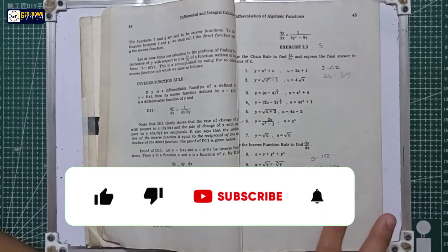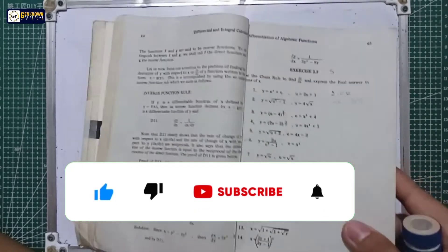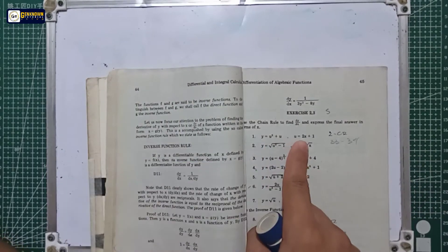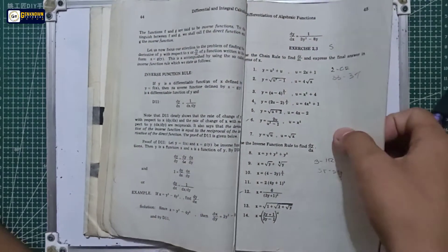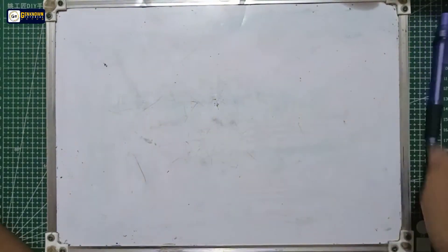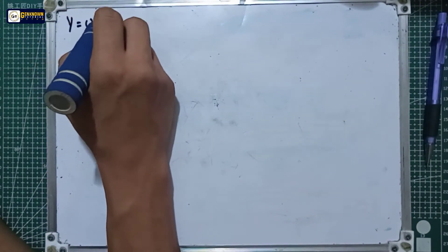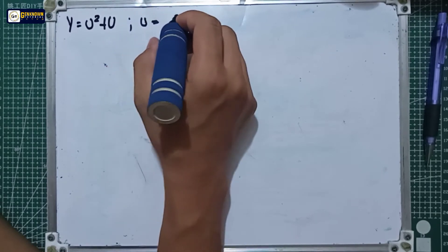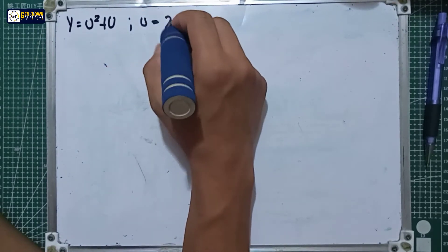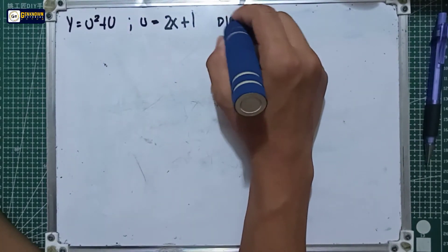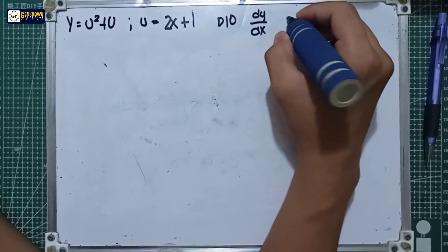Let's try the problems in Exercise 2.3 to be knowledgeable enough to solve chain rule problems. In number one, we have y is equal to u squared plus u, and u is equal to 2x plus 1. So for the y equation we have y = u² + u, and for the u equation we have u = 2x + 1.